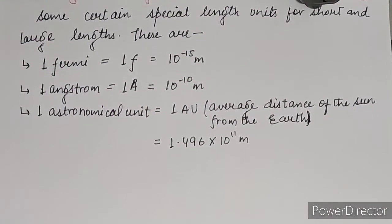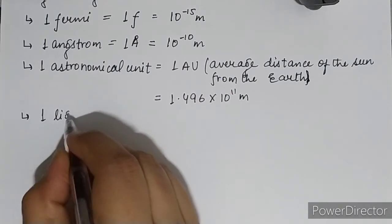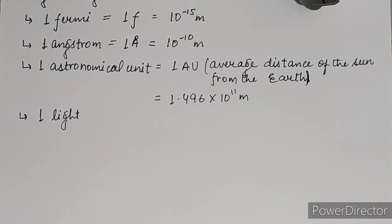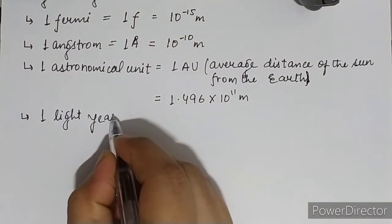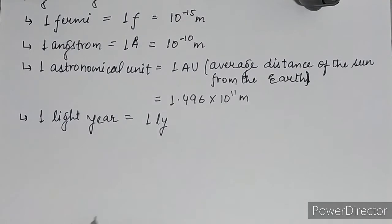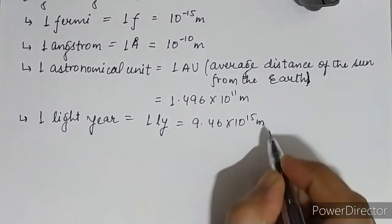Next one is the light year, denoted by LY. Sometimes in an exam the question is asked: among the units meter, angstrom, light year, and year — which is not a unit of length? Most students mistakenly tick light year, but a light year is a unit of length only. Its value is 9.46 × 10 to the power 15 meters.